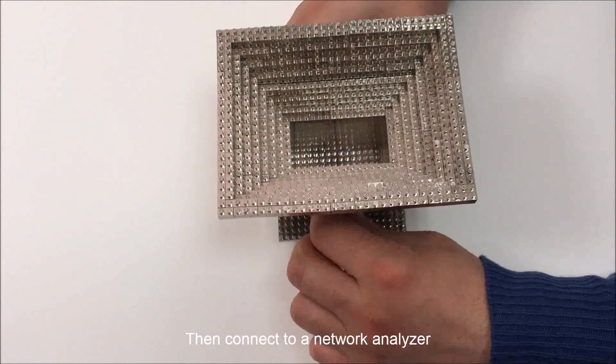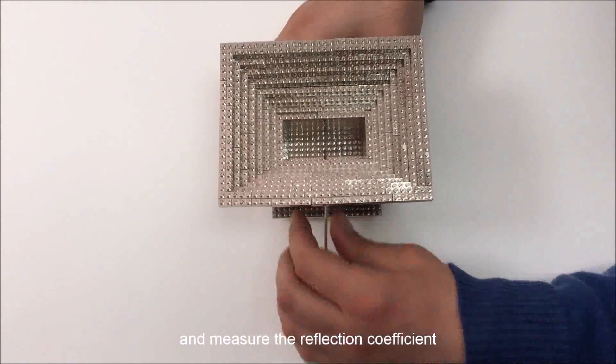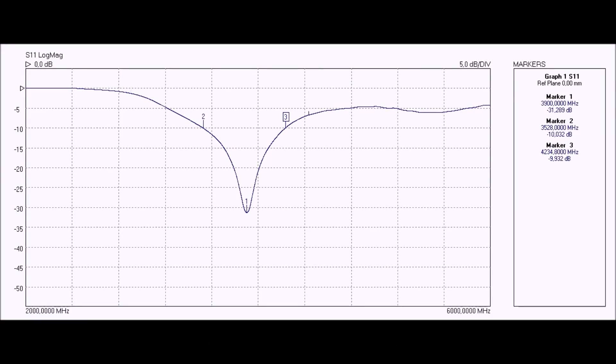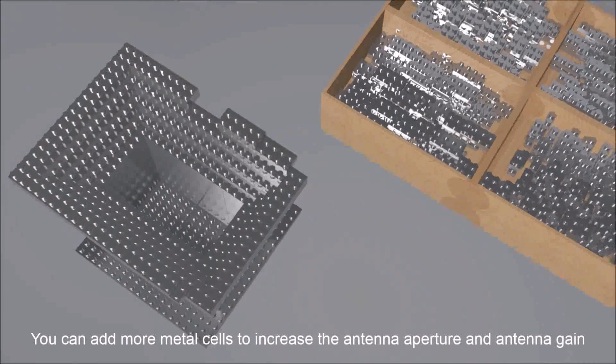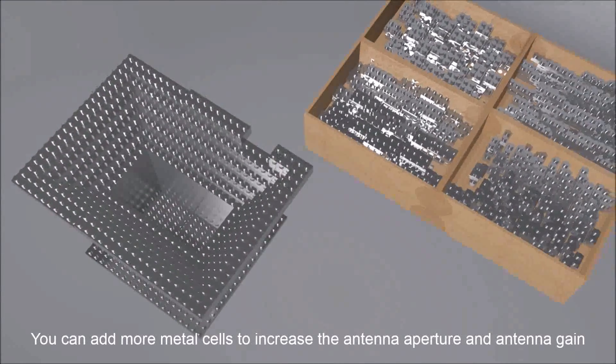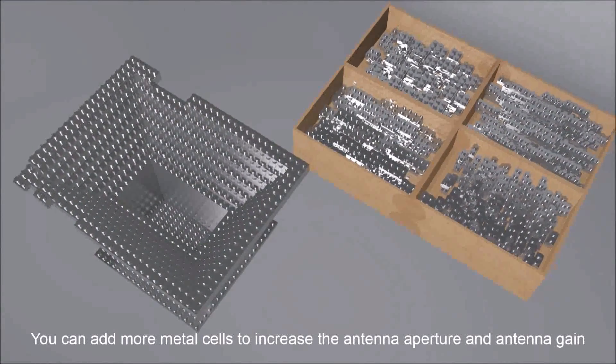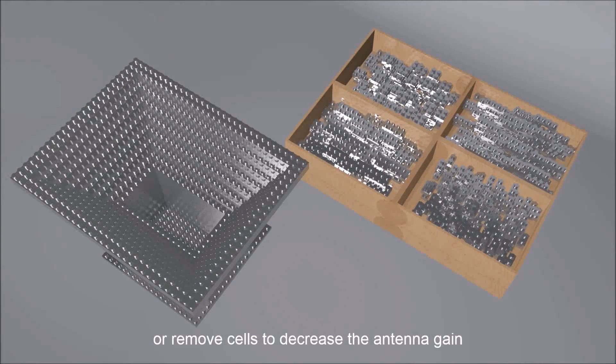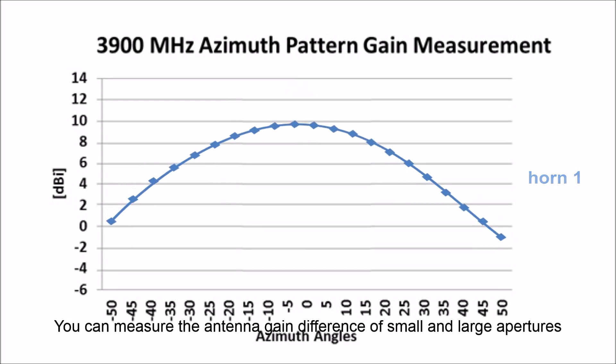Then, connect to a network analyzer and measure the reflection coefficient. You can add more metal cells to increase the antenna aperture and antenna gain or remove cells to decrease the antenna gain. You can measure the antenna gain difference of small and large apertures.